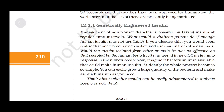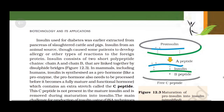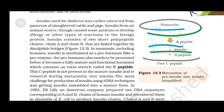Think about whether insulin can be orally administered to diabetic people, and why. Insulin consists of two short polypeptide chains — chain A and chain B — linked together by disulfide bridges. In mammals including humans, insulin is synthesized as a pro-hormone that needs to be processed before it becomes a fully mature and functional hormone. It contains an extra stretch called the C-peptide, which is not present in mature insulin and is removed during maturation. The main challenge for producing insulin using recombinant DNA techniques was getting insulin assembled into a mature form.